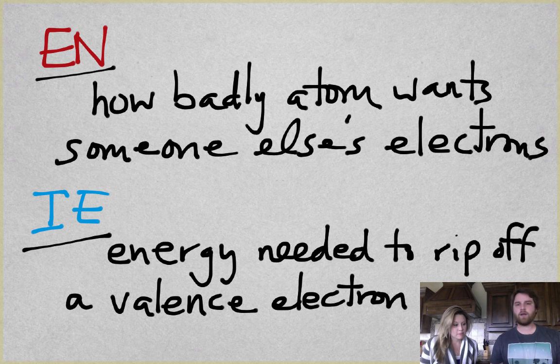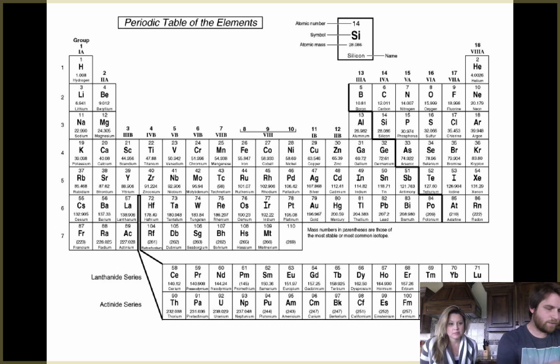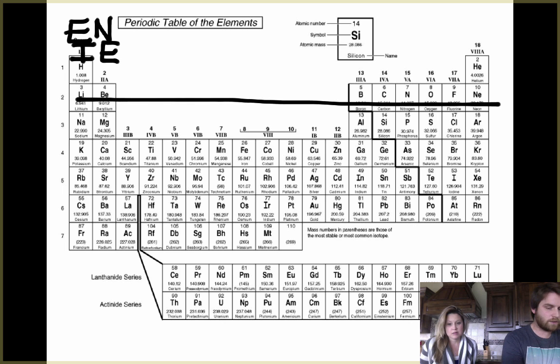So let's talk about these trends, how they look on the periodic table. This should be pretty easy. They actually both have the exact same trend. So both electronegativity and ionization energy, as you move across, they will increase.